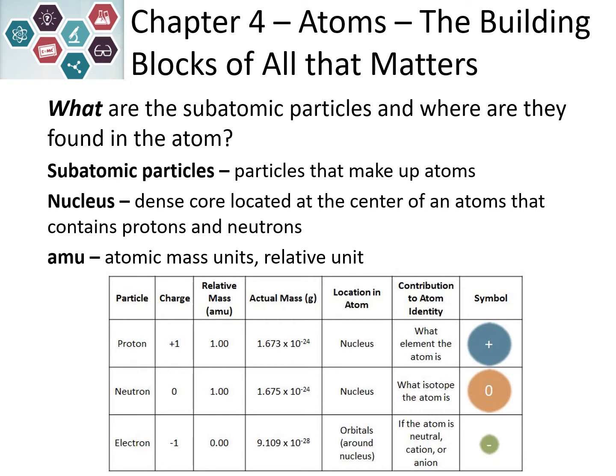Electrons occupy the empty space around the nucleus, so they're found in the orbitals. They have much less mass than protons or neutrons, so we typically say they have no mass — it's not significant compared to the protons and neutrons. Electrons carry a negative one charge, and we represent them with a minus sign. The size we draw electrons is much smaller than protons or neutrons.